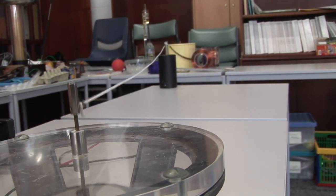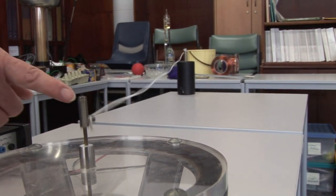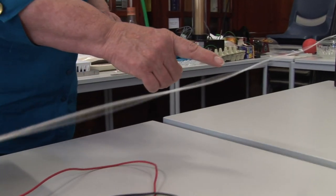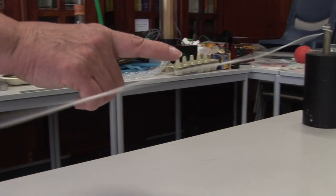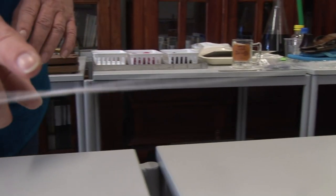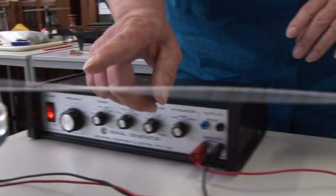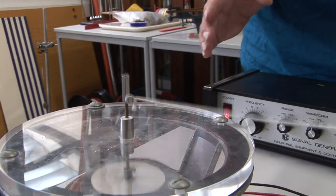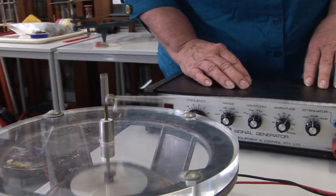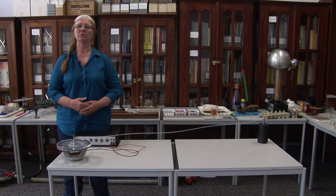Standing waves occur when you have a pulse that's sent down the string, reflects off the end and comes back, and the wavelength is just at the right length so that half wavelength multiples will fit into the length of your string. This is one way of demonstrating resonance.